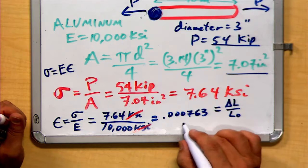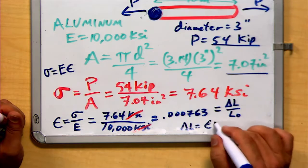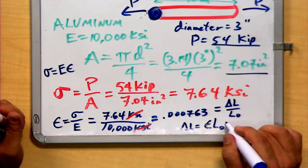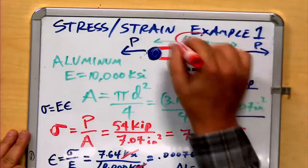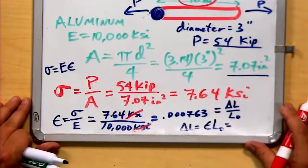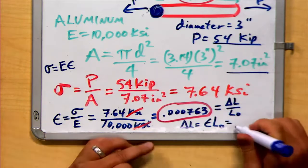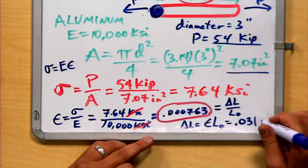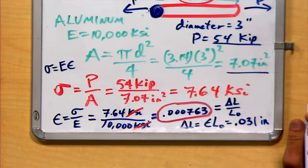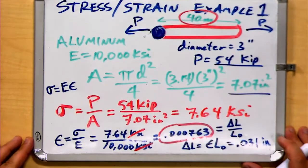So if we want to determine our change in length, we multiply the strain by the initial length. So our strain times our length gives us a value of 0.031 inches, roughly 0.031 of an inch compared to 40 inches.